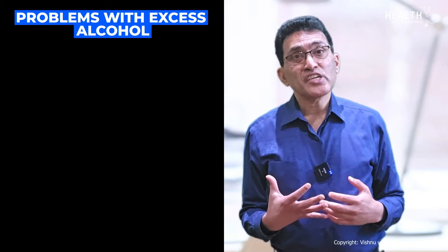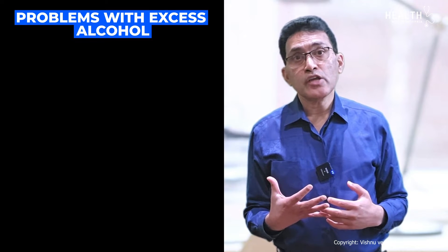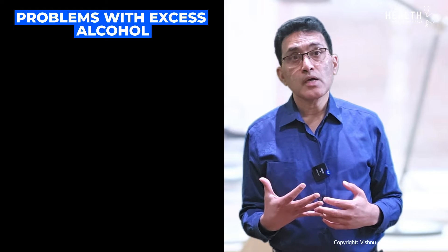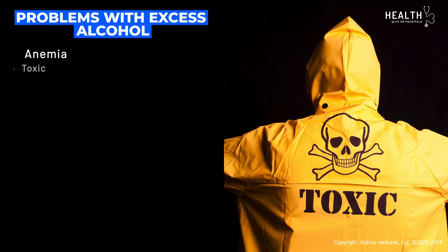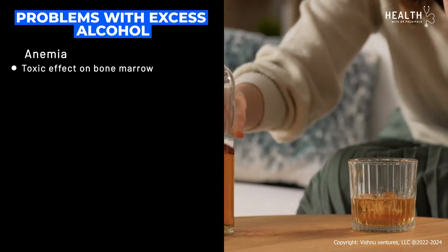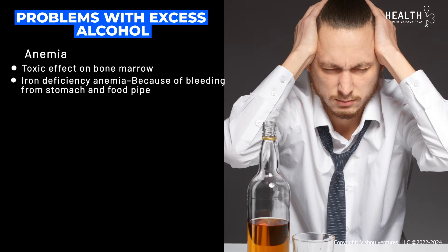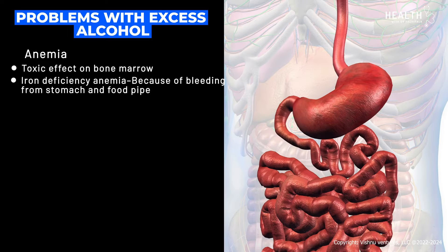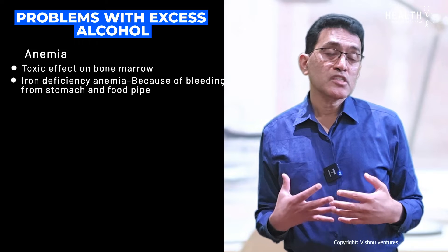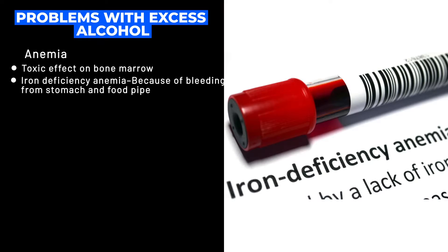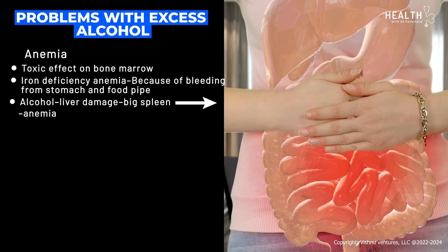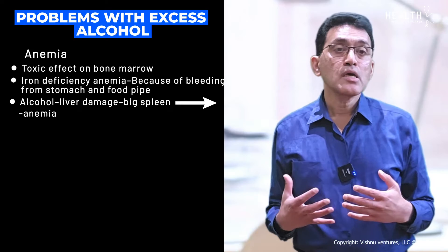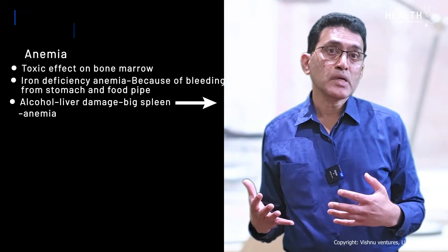Some of the problems that can potentially happen with alcohol intake include anemia. Anemia could be secondary to the toxic effect of alcohol on the bone marrow. In addition, alcohol can lead to inflammation of the stomach and esophagus, leading to bleeding and iron deficiency. Alcohol can also lead to liver damage and an enlarged spleen, which can further lead to anemia.